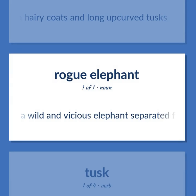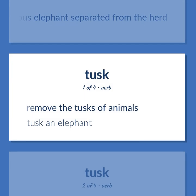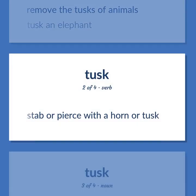A wild and vicious elephant separated from the herd. Remove the tusks of animals — tusk an elephant. Stab or pierce with a horn or tusk.